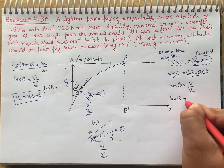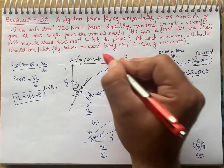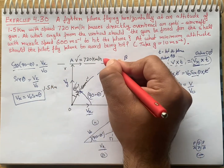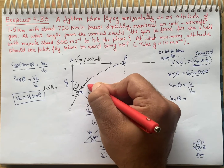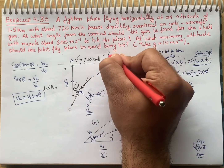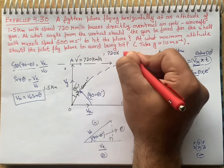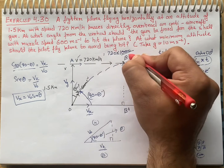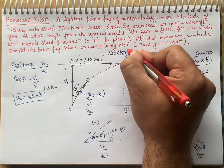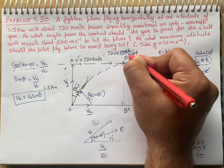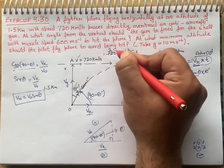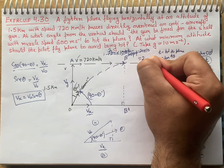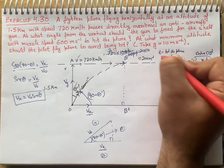Sin theta equals v divided by V0. The value of v is 720 km per hour, but this is not SI unit. V0 is 600 meter per second. So let me convert 720 km/h to SI: 720 × 1000 meters divided by 3600 seconds. After cancellation, 20-20 cancels, giving 200 meters per second.